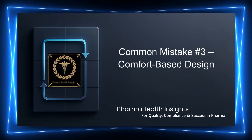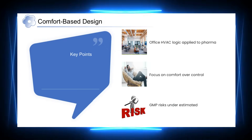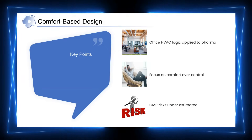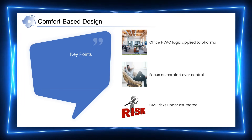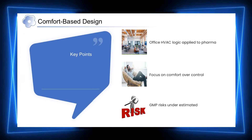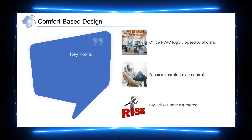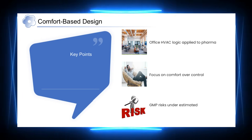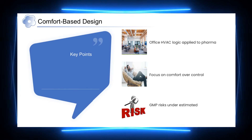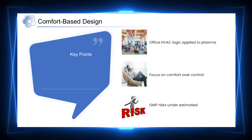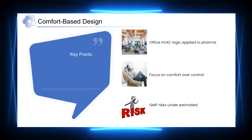Another mistake is more subtle but equally dangerous. A common mistake occurs when HVAC and AHU systems are designed using principles meant for office or commercial buildings. In such cases, the focus is primarily on human comfort, temperature stability, and energy efficiency. However, pharmaceutical facilities are fundamentally different. The primary objective is not comfort, but product protection. When comfort-based design logic is applied without considering GMP risks, critical controls related to airflow, pressure, and contamination prevention may be underestimated.